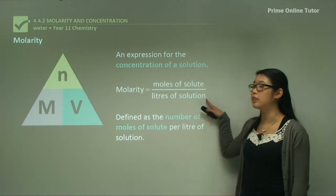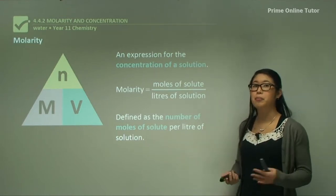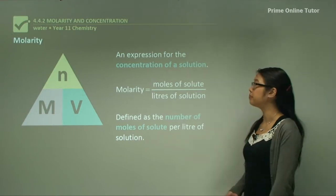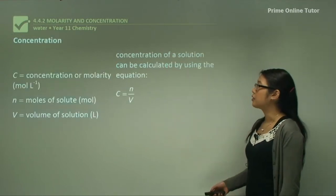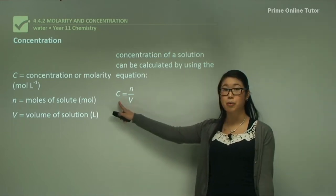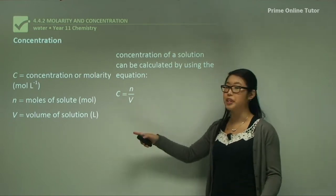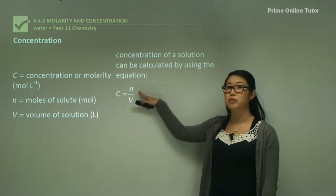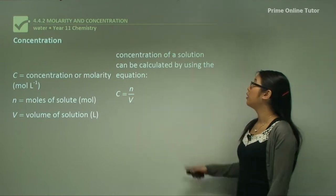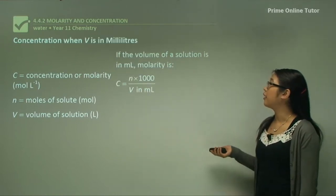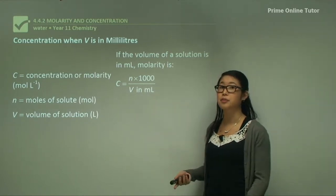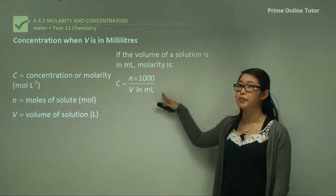Always make sure you convert volume to litres — if they give you millilitres, convert it, otherwise you'll get the wrong answer. We use the equation C equals N over V, where C is the molarity in moles per litre, N is the moles of solute, and V is the volume of solution. If the volume is in millilitres, convert it to litres by dividing by a thousand.